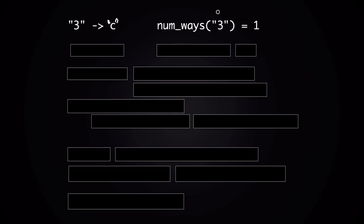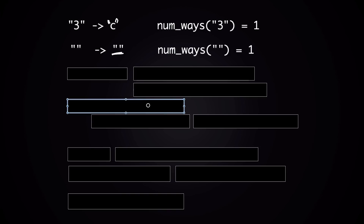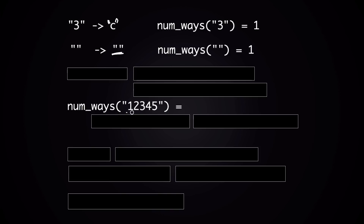And if you're given the empty string, the original message must have been an empty string as well, so there's only one possible message — your function should return 1. Now what about more complex inputs? For example, '12345'.